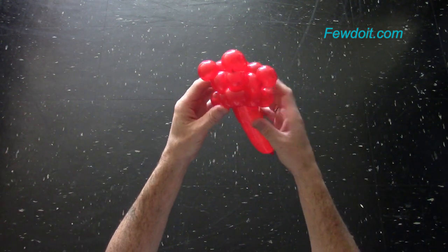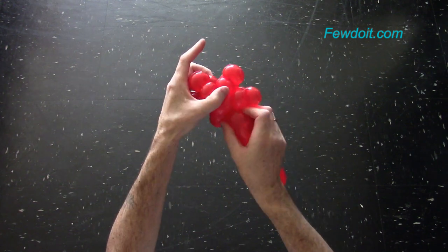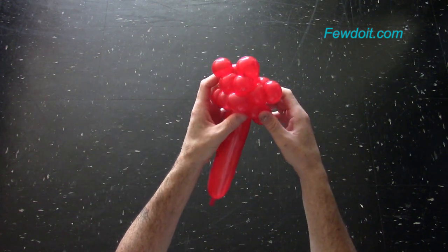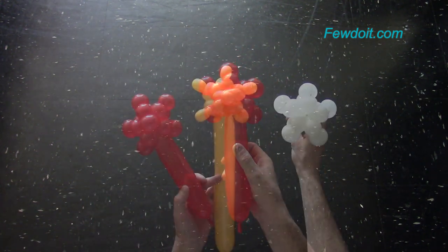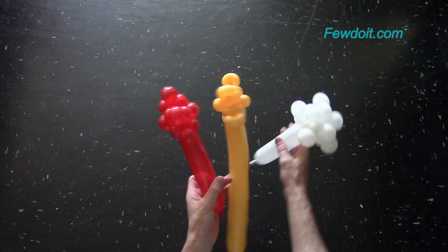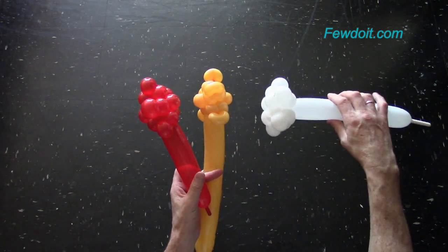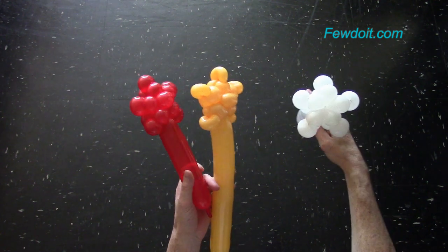Now our sculpture look exactly the same from the back and from the front. Here are some more examples of the same sculpture made with different colors. The white sculpture will represent the snowflake.